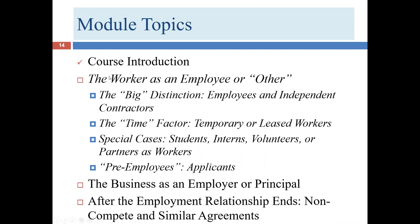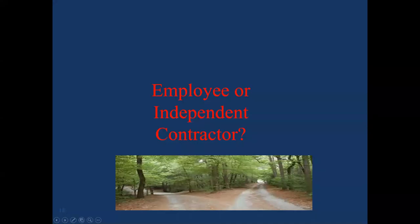We're going to reflect upon the issue of the status of the worker. When I use the term worker, this is the more generic term. We actually have two choices for the worker. Like Robert Frost's poem about two roads in a Glen, we have the employer-employee or independent contractor situation. You're either an employee or an independent contractor — there's no third option, and it's not possible to be both.